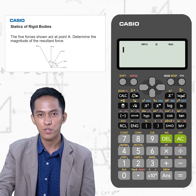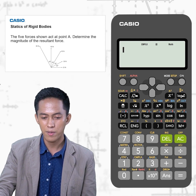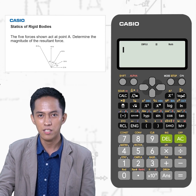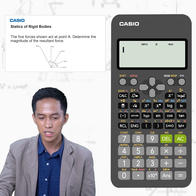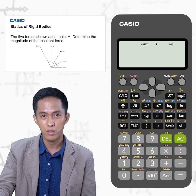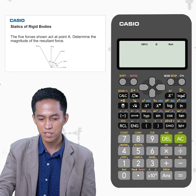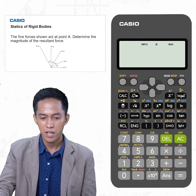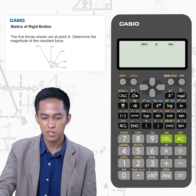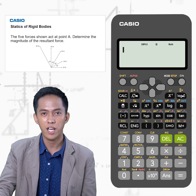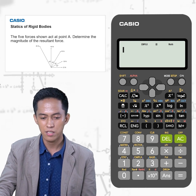The 30N force is at 30 degrees with respect to the positive x-axis. The 45N force is at 30 plus 30, which is 60 degrees with respect to the positive x-axis. The 60N force is at 30 plus 30 plus 30, or 90 degrees, with respect to the positive x-axis.